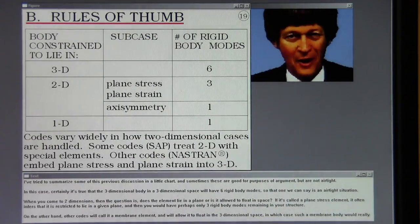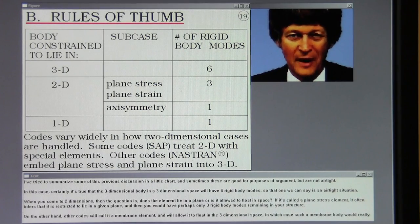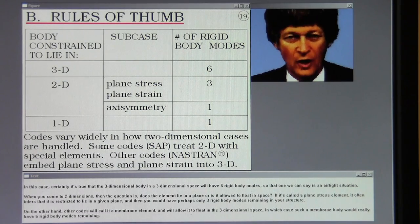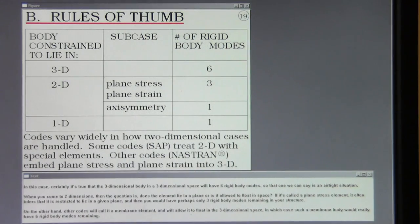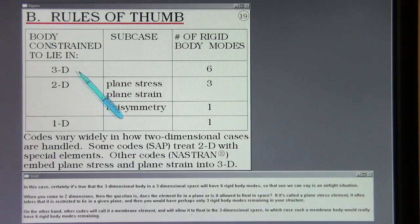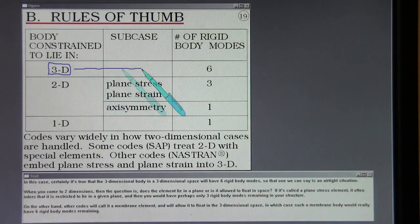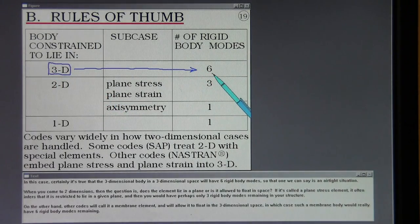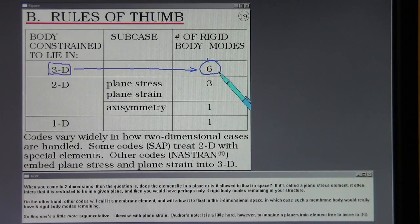I've tried to summarize some of this previous discussion in a little chart and sometimes these are good for purposes of argument but are not airtight. In this case, certainly it's true that the three-dimensional body in a three-dimensional space will have six rigid body modes. So that one we can say is an airtight situation.